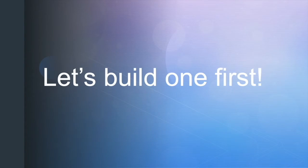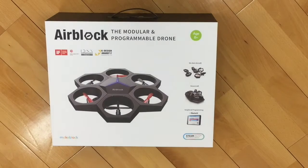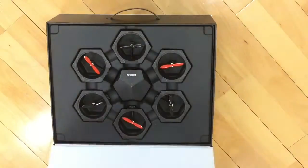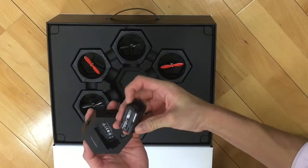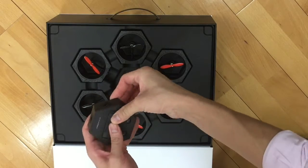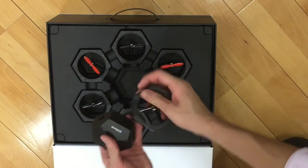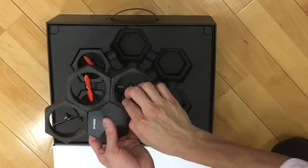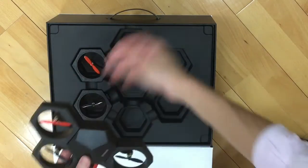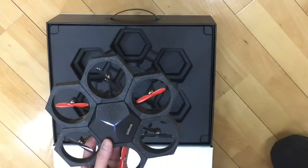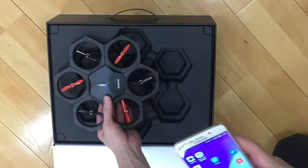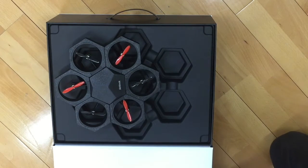Now let's quickly set up the AirBlock. AirBlock is very easy to set up. You will see one main module and six propeller modules. First, I use the inner battery-driven device and apply the air cable. Now I use the battery-driven device. It connects to the mains with the air cable.